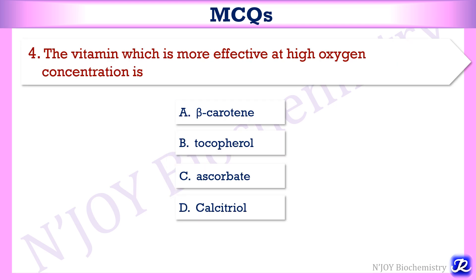Fourth MCQ: the vitamin which is more effective at high oxygen concentration is — beta-carotene, tocopherol, ascorbate, or calcitriol? Beta-carotene is effective at low oxygen concentration, but tocopherol is effective at normal and high oxygen concentration as an antioxidant. So the answer is B, tocopherol.